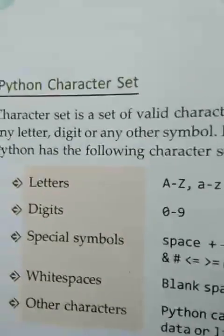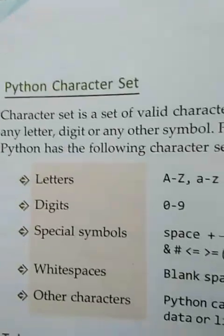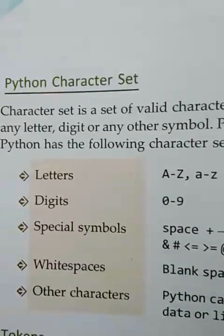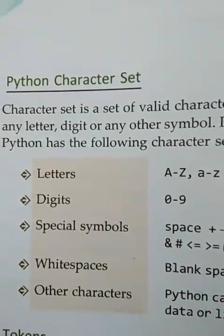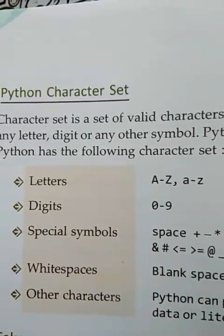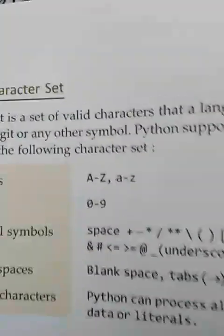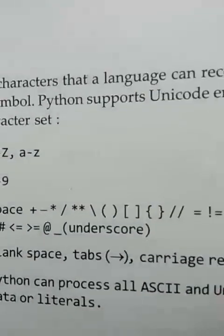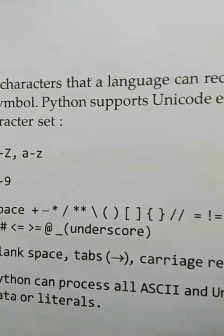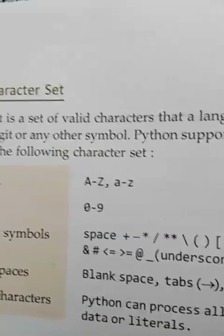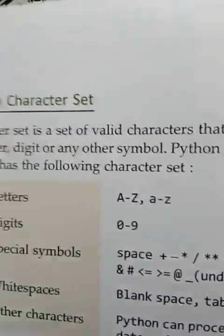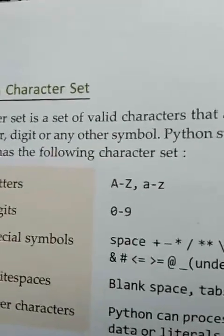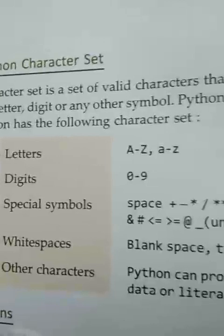The first topic is character set. Every language has a different character set — this may be ASCII, ISCII, or Unicode. Python supports the Unicode character set, in which each character takes two bytes of memory. A character set is a set of valid characters which a language can recognize. These characters may be letters, digits, special symbols, and other characters.